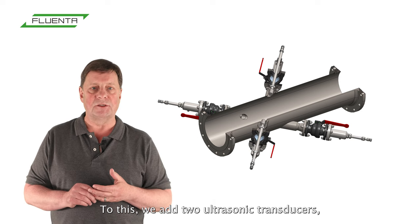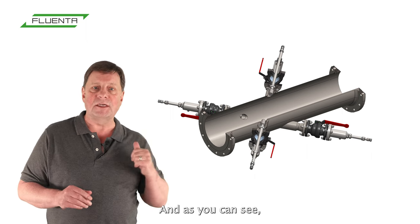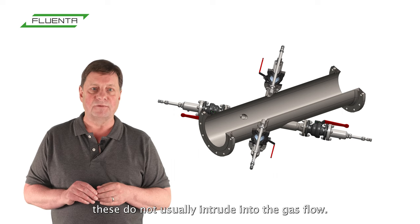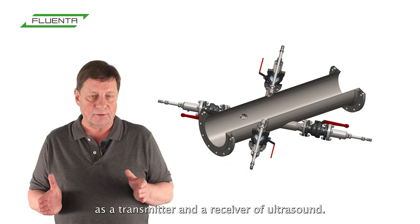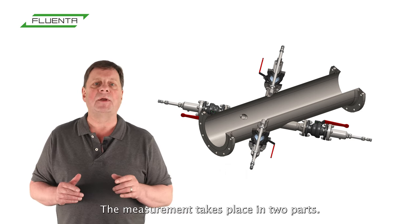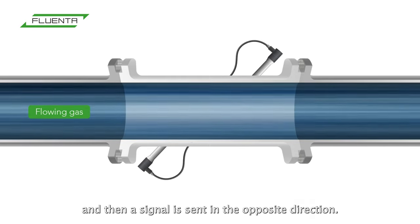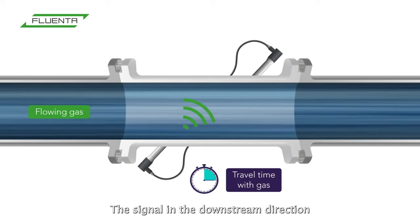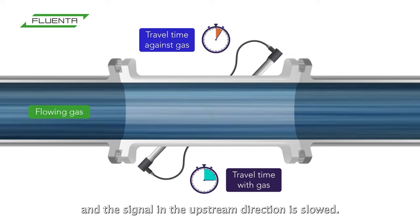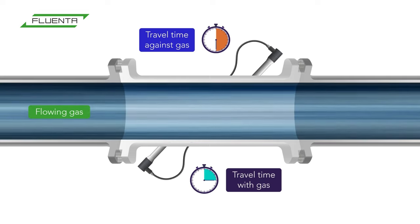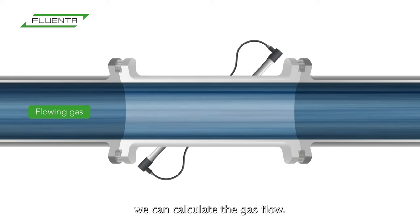We add two ultrasonic transducers, which are typically angled at 45 degrees to the direction of the flow. As you can see, these do not usually intrude into the gas flow. Each transducer can act as a transmitter and a receiver of ultrasound. The measurement takes place in two parts: first, a signal is sent from one transducer to the other, and then a signal is sent in the opposite direction. The signal in the downstream direction is speeded up by the gas flow, and the signal in the upstream direction is slowed. We measure the time of flight for each of these signals, and from those measurements we can calculate the gas flow.